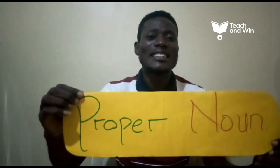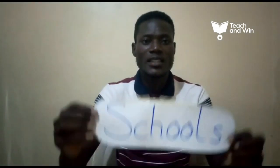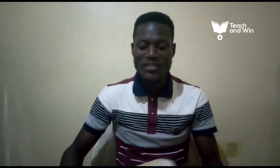Proper nouns are the actual names of: 1. Persons. 2. Schools. 3. Places of worship. 4. Towns. 5. Cities.